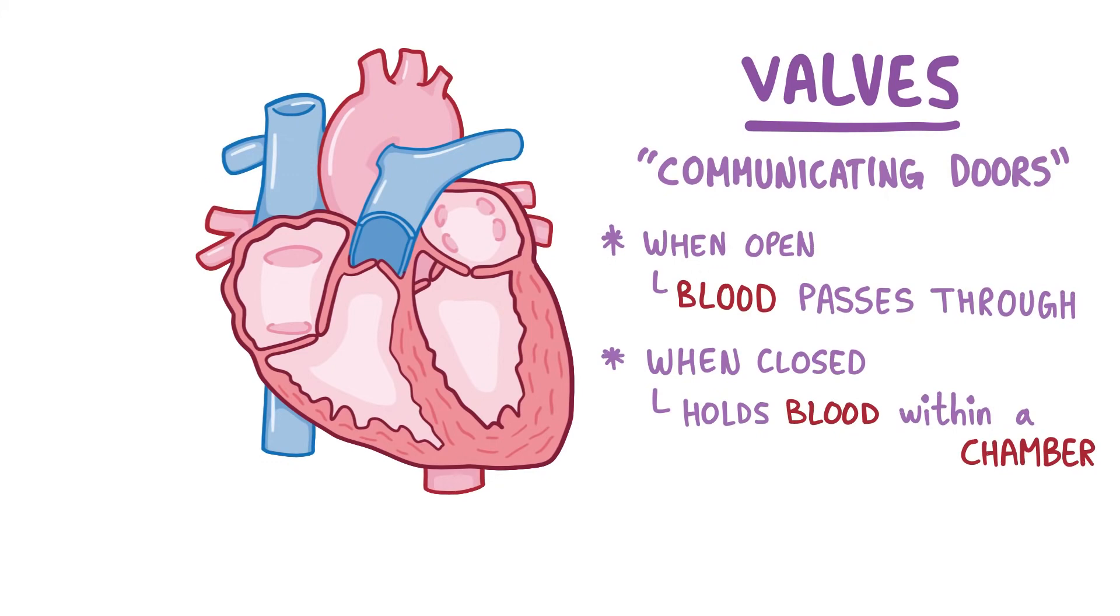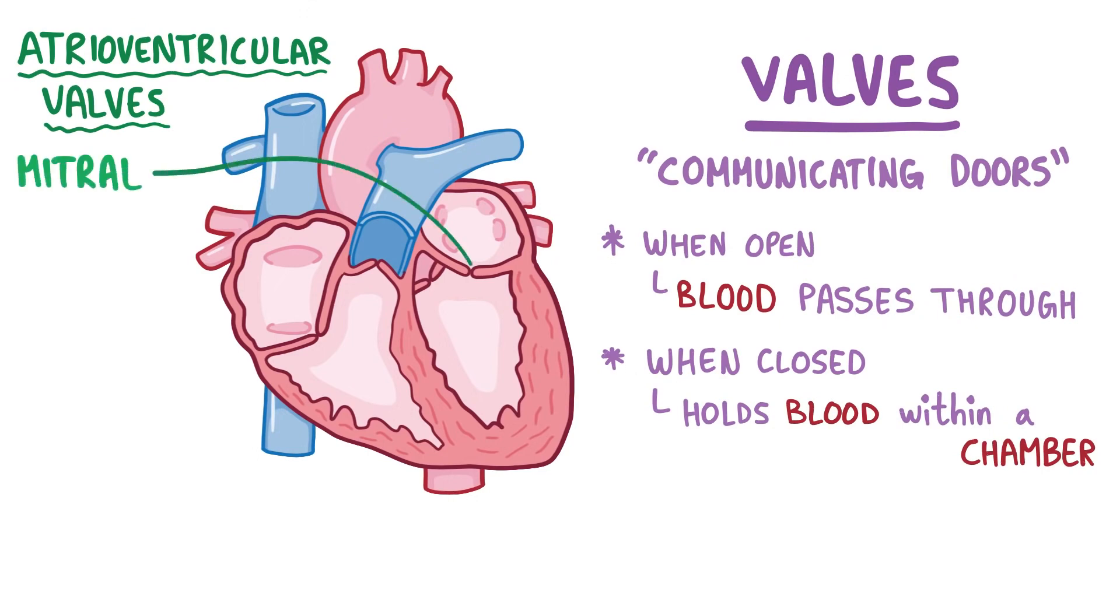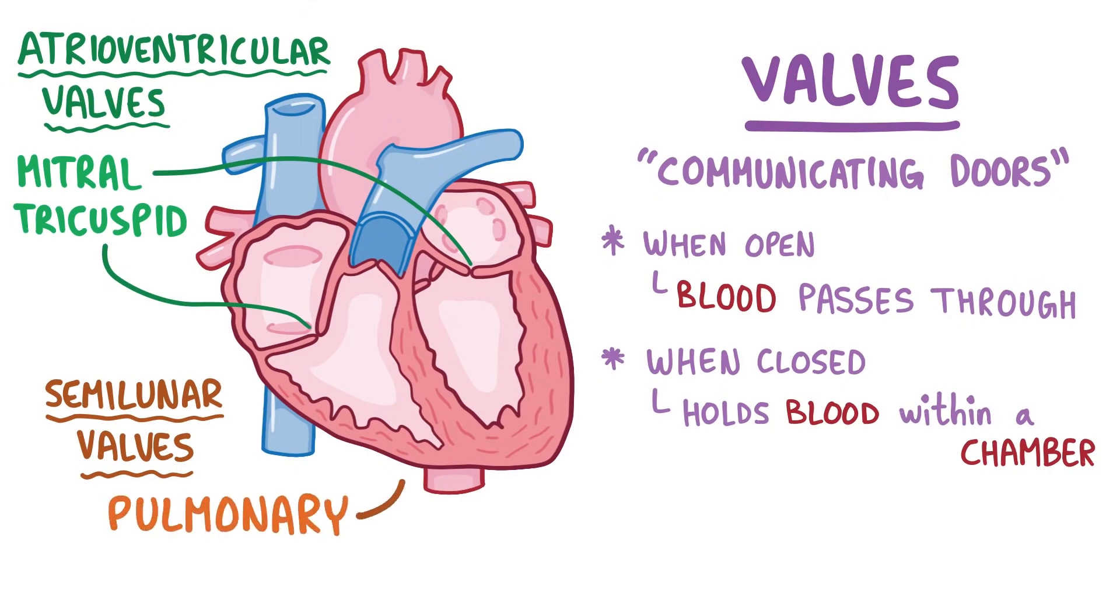So in total, our heart has four valves, two atrioventricular valves which separate the atria from the ventricles and are the mitral valve on the left side and the tricuspid valve on the right side, and two semilunar valves which separate the ventricles from the large arteries coming off of them and are the pulmonary valve on the right side and the aortic valve on the left side.